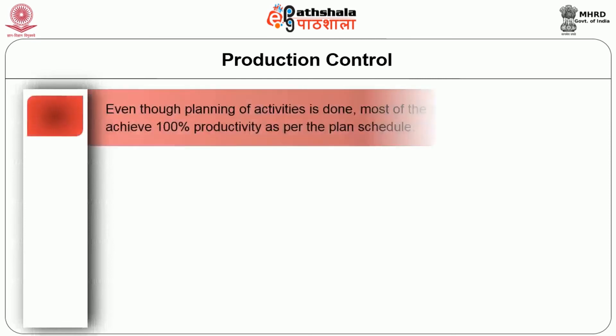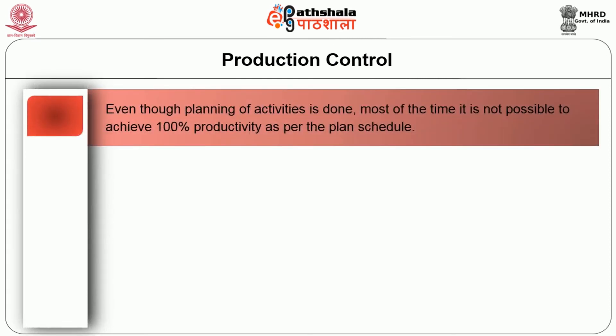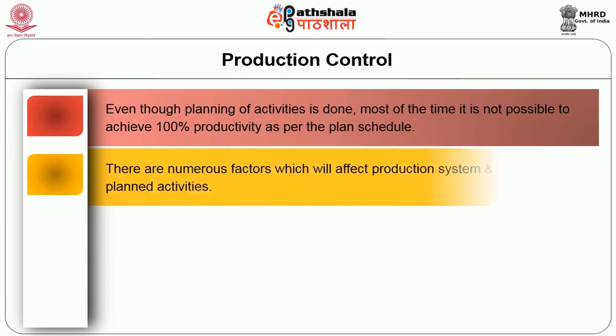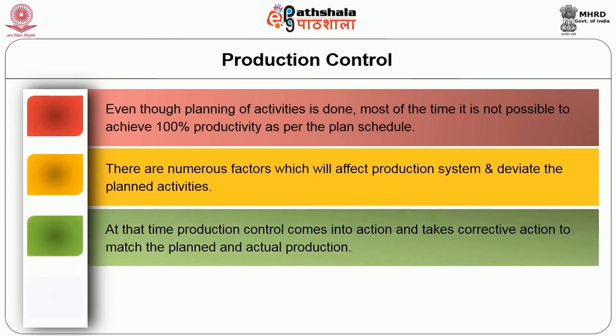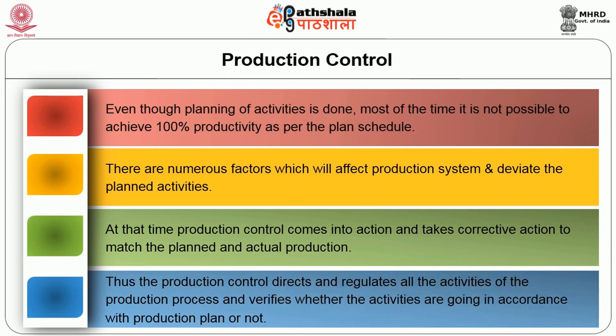Production control. Even though planning activities are done, most of the time it is not possible to achieve 100% productivity as per the planned schedule. There are numerous factors which affect the production system and deviate the planned activities. At that time, production control comes into action and takes corrective action to match the planned and actual production. Thus, production control directs and regulates all the activities of the production process and verifies whether the activities are going in accordance with the production plan or not.